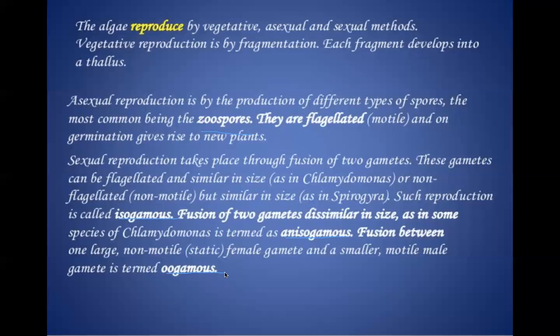This is one of the most common exam questions: if gametes are flagellated and of the same kind, the example is Chlamydomonas; if non-flagellated but of the same kind, the example is Spirogyra. So when both male and female gametes are identical in size, it is isogamous type.